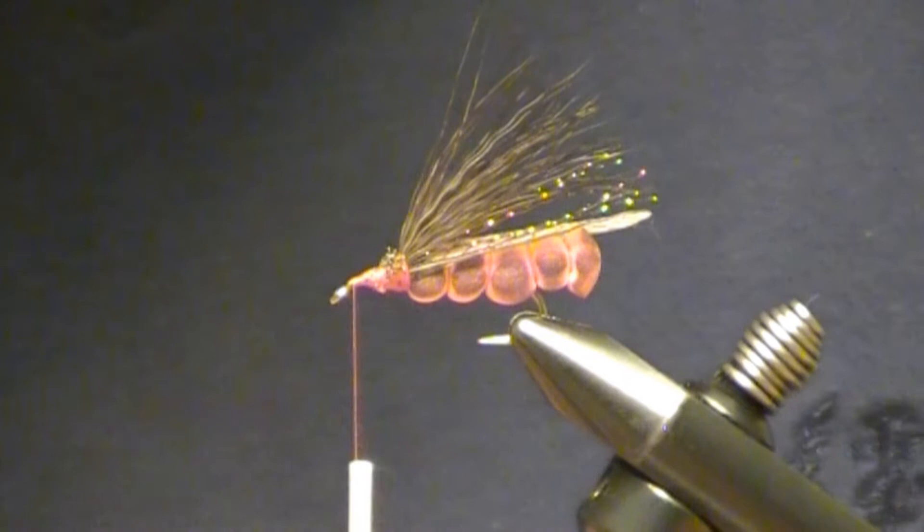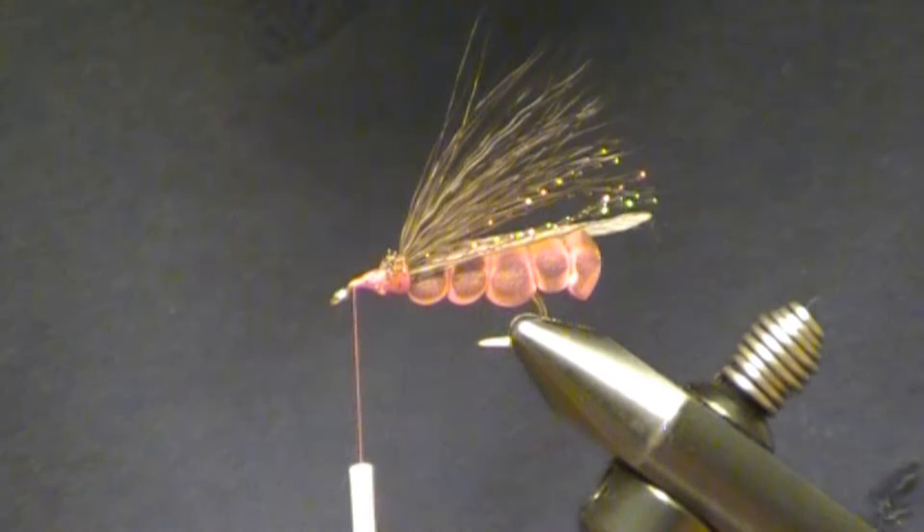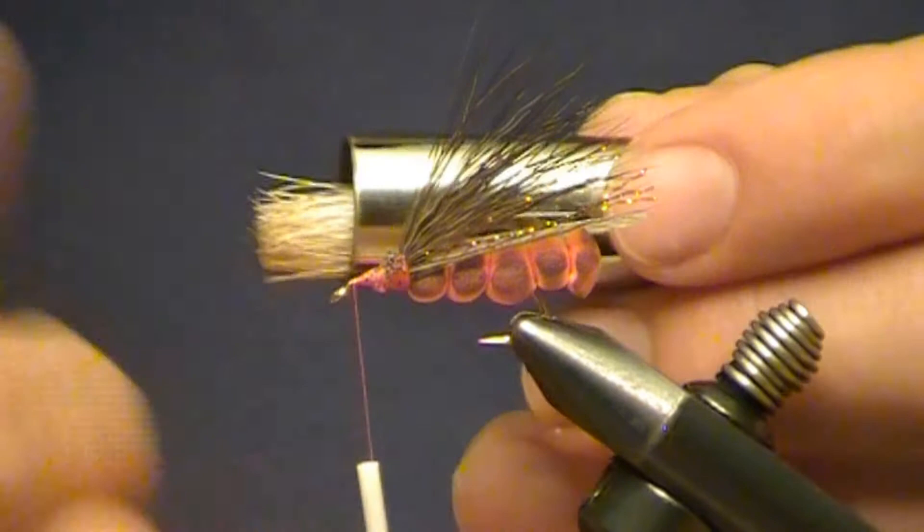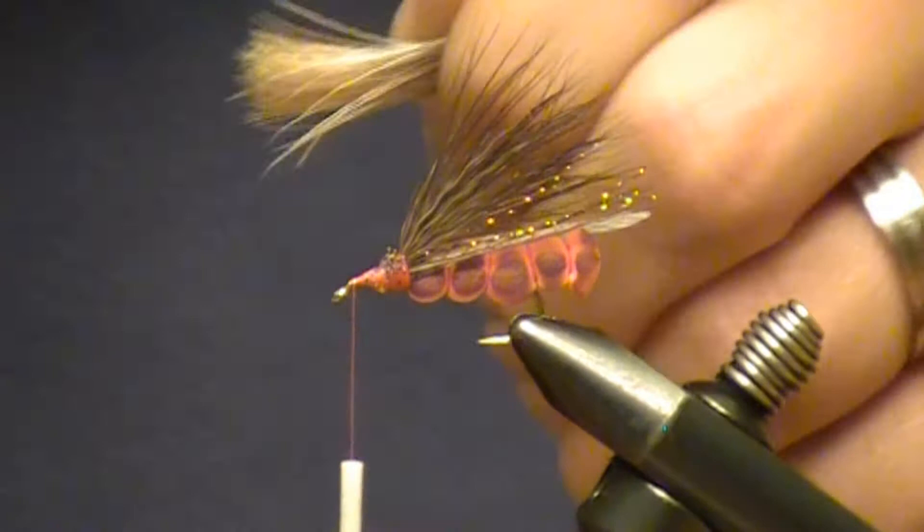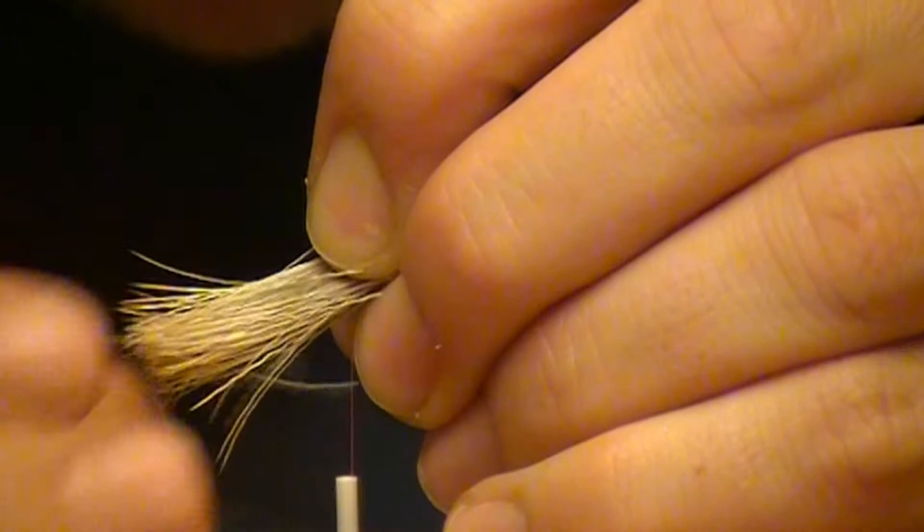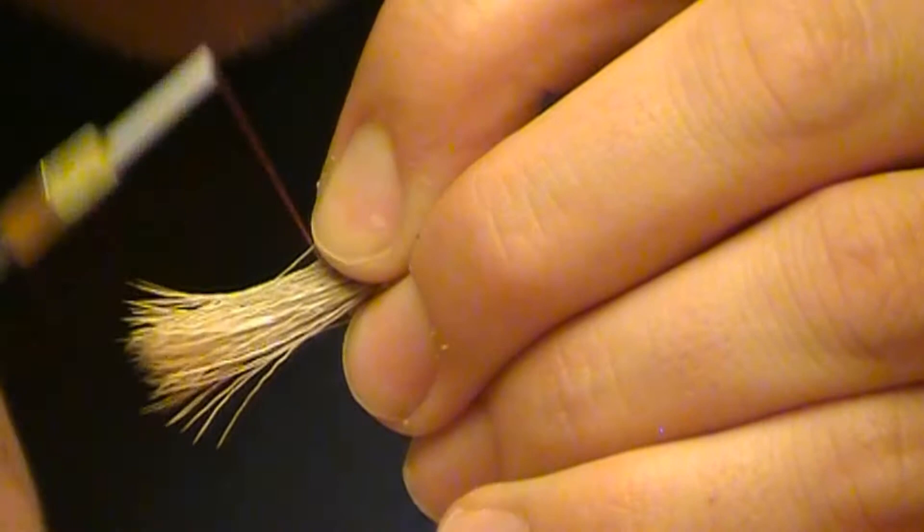Throw it in the stacker. I'm actually going to take it out the opposite way so the tips are pointing forward. I'm going to pull off all the little short fibers. Tie it in on front, giving myself plenty of room to form a bullet head. Make a couple wraps and then let it spin around.